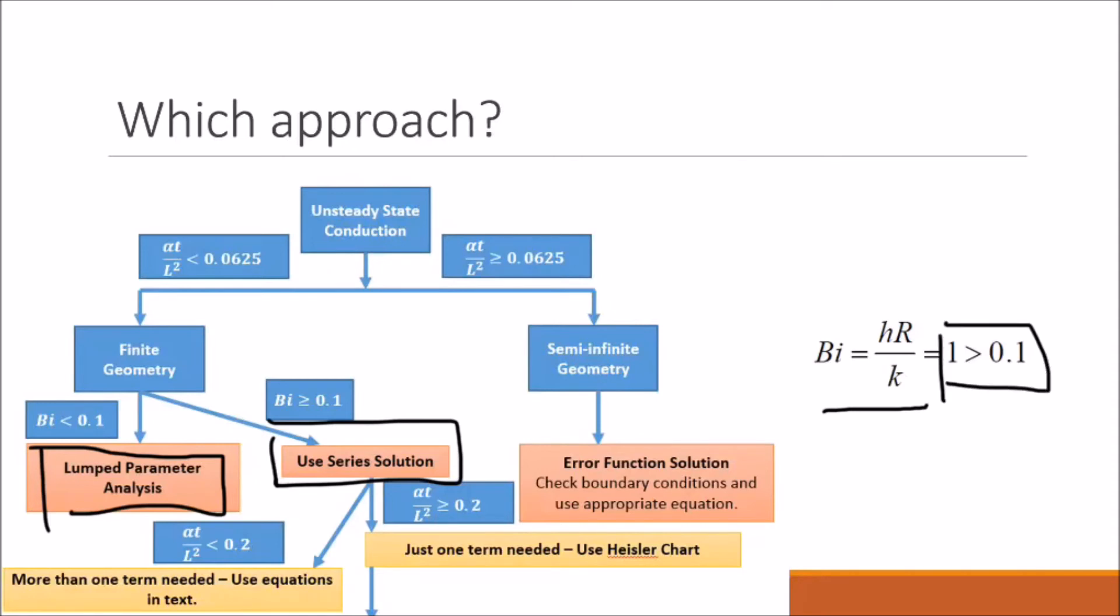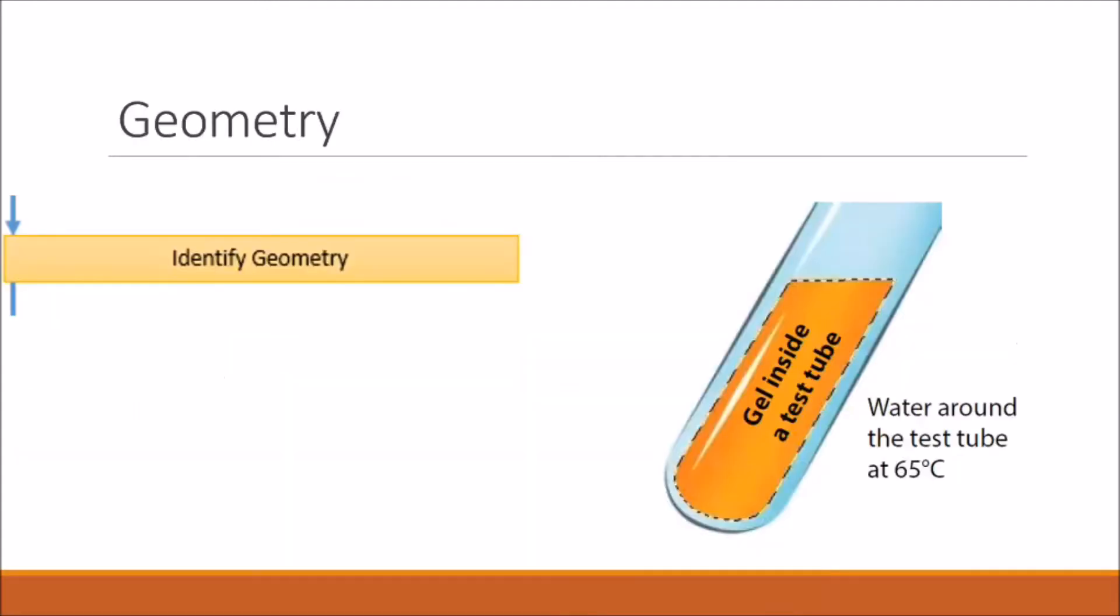We're going to have to use our series solutions to solve this problem. Now we need to determine what geometry we're dealing with. This is pretty obvious because we're dealing with a tube, so we're going to be using a cylindrical geometry.